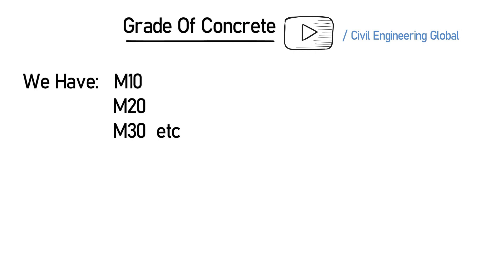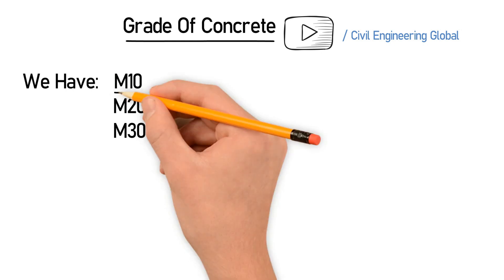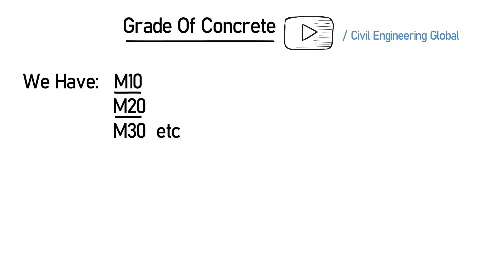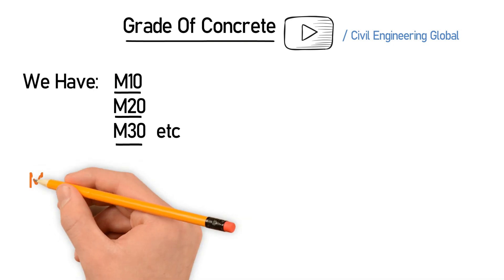These are all the grades of concrete. The M denotes the mix, followed by the compressive strength in Newton per millimeter square. So M10, M20, M30 — M is the mix and 10 is the compressive strength in Newton per millimeter square.